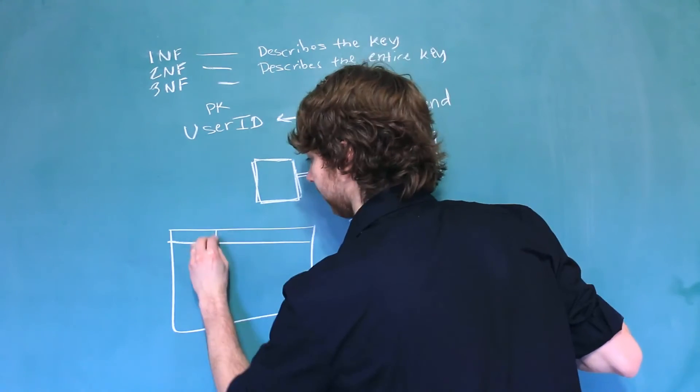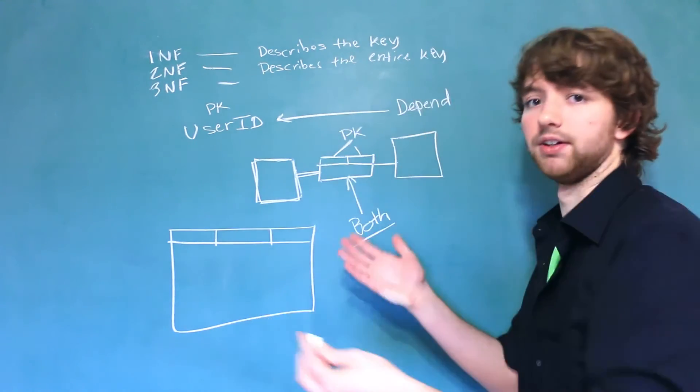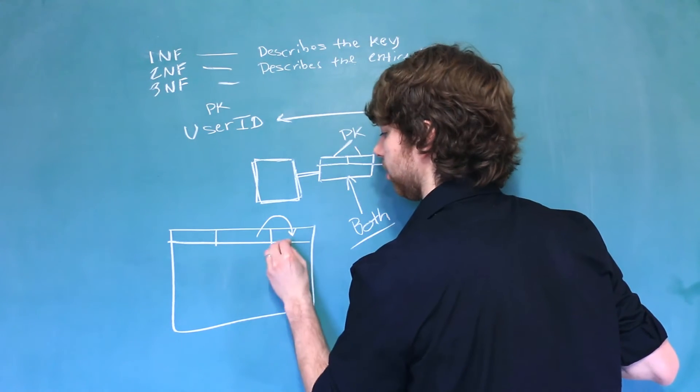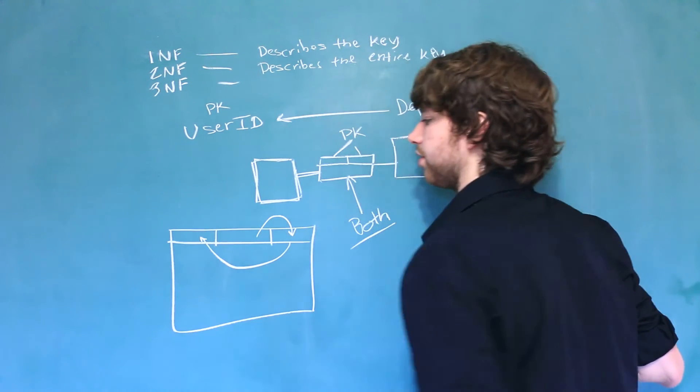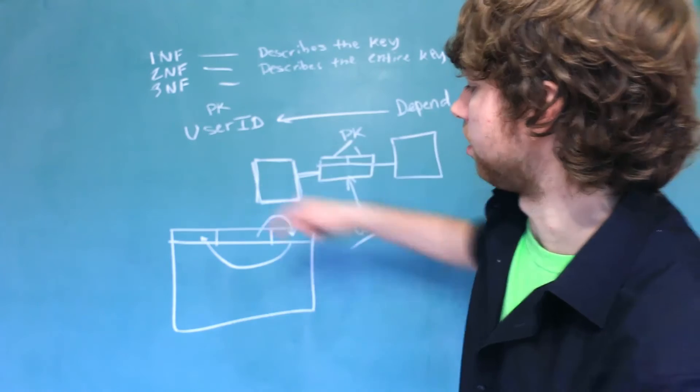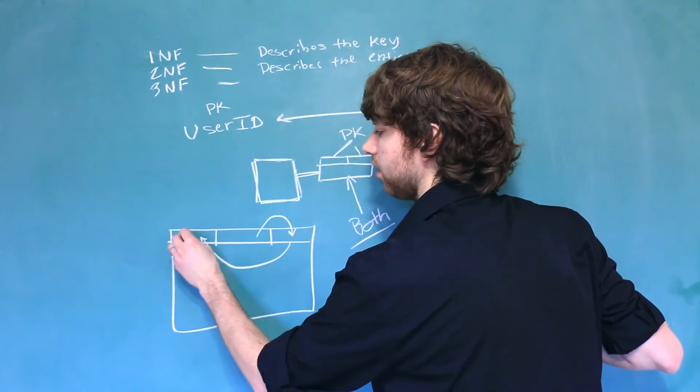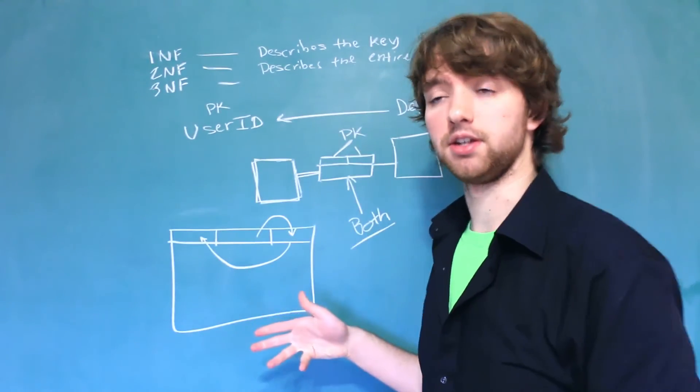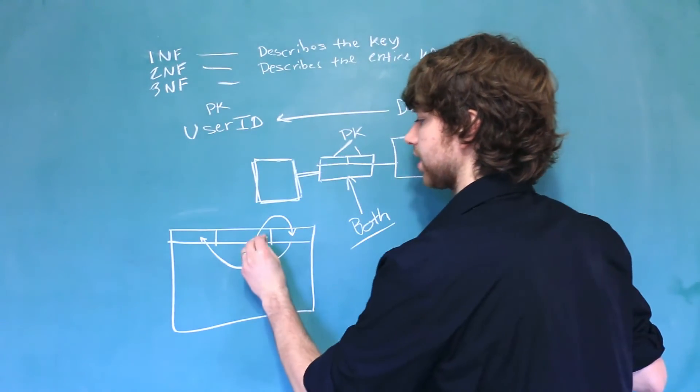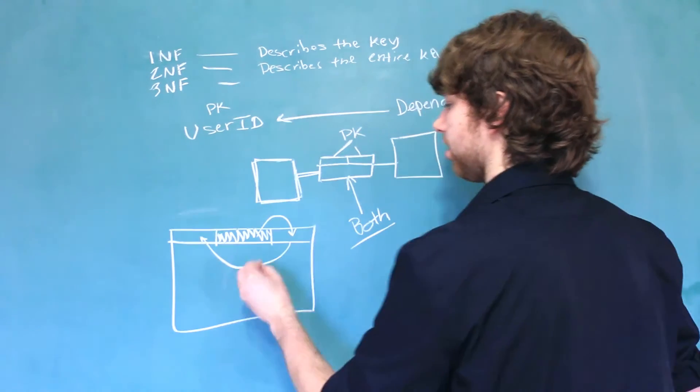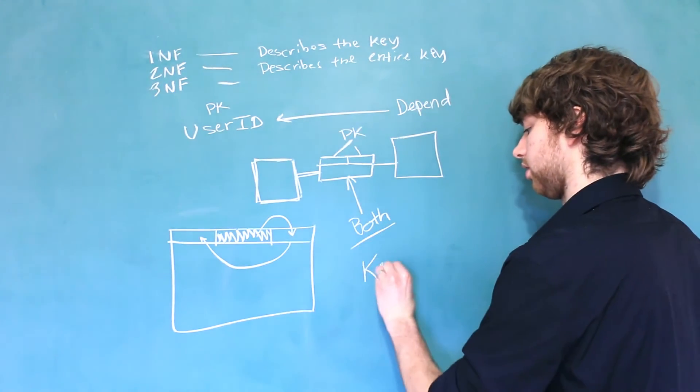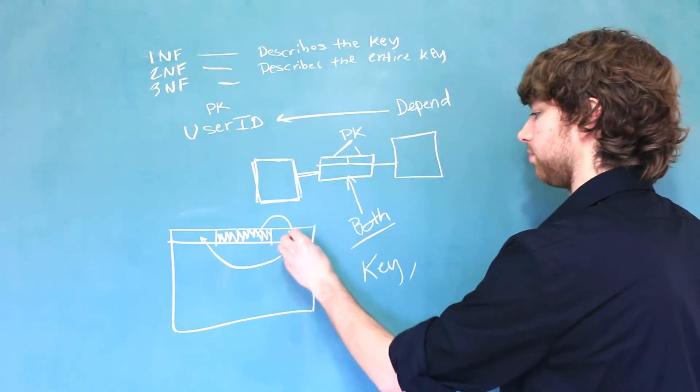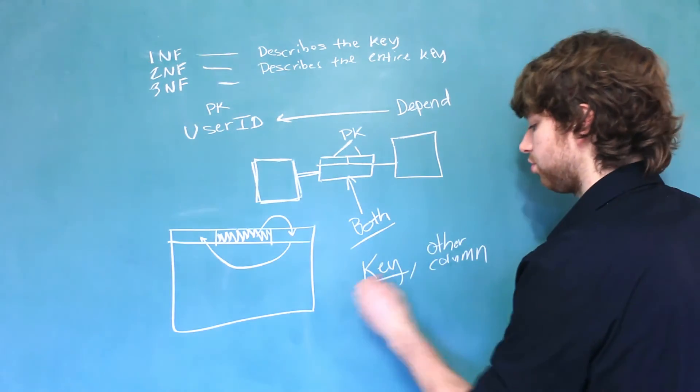So, if we have a table, and we have three columns, for example, you have to have at least three. This column might depend on this one, which depends on this one. So, you could say, this column depends on this one through this one. This is a transitive dependency. So, in this situation, this column right here depends on the key transitively here, but it also depends on this column too. So, in this situation, there's two dependencies.